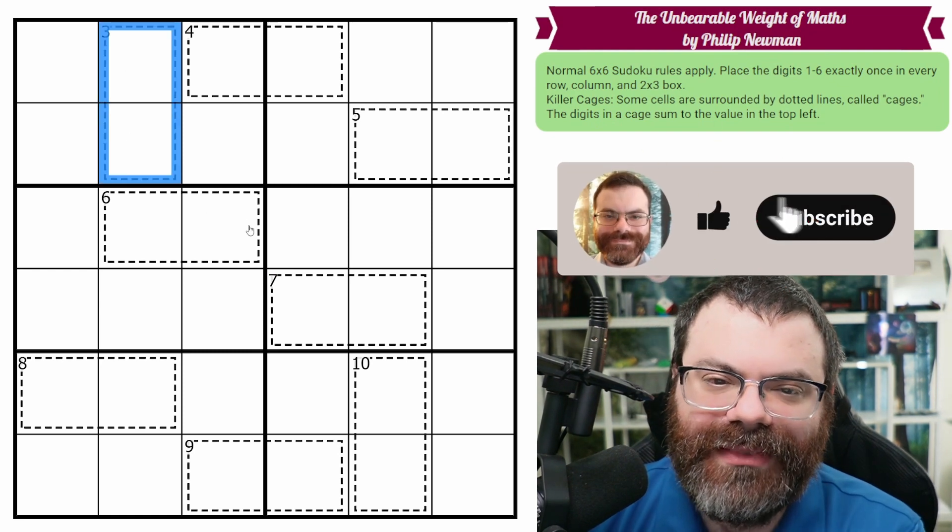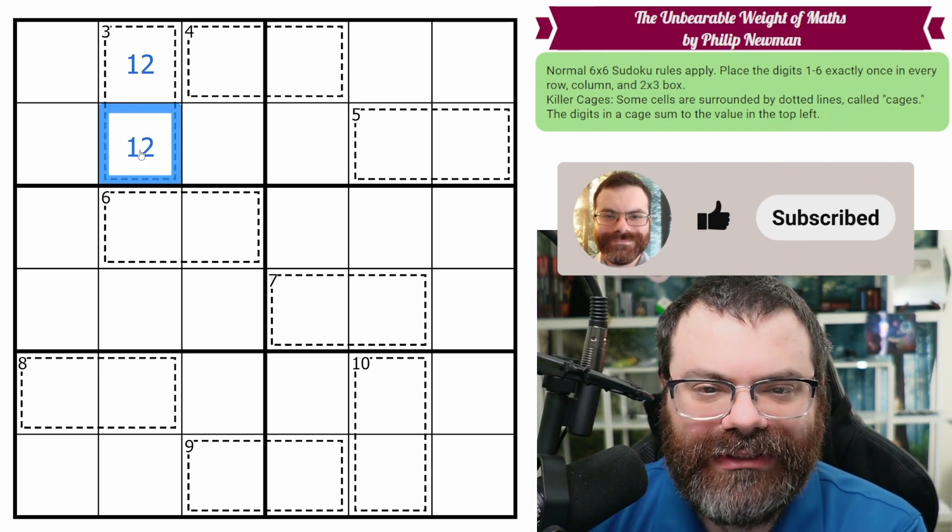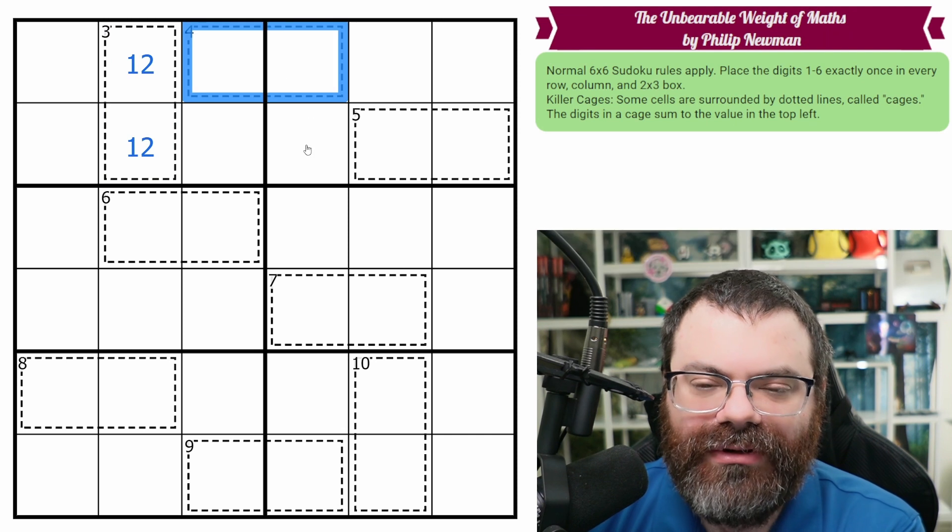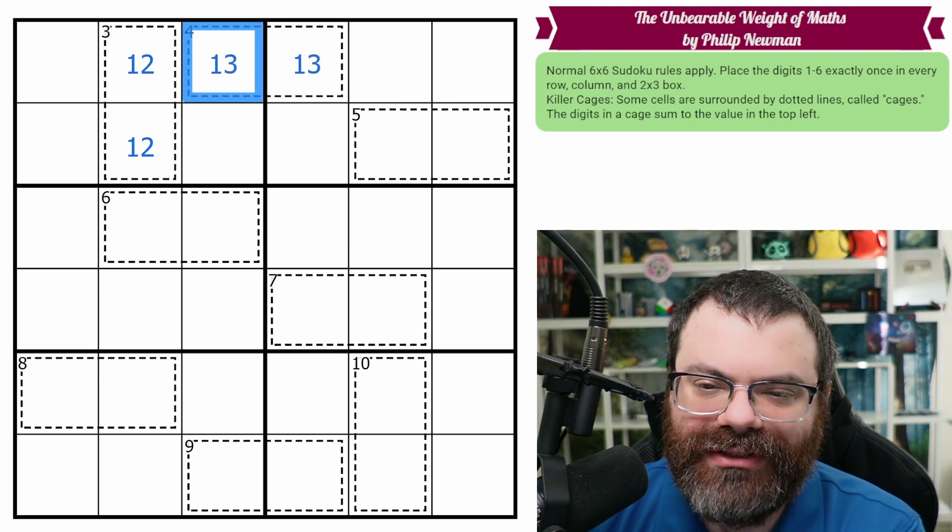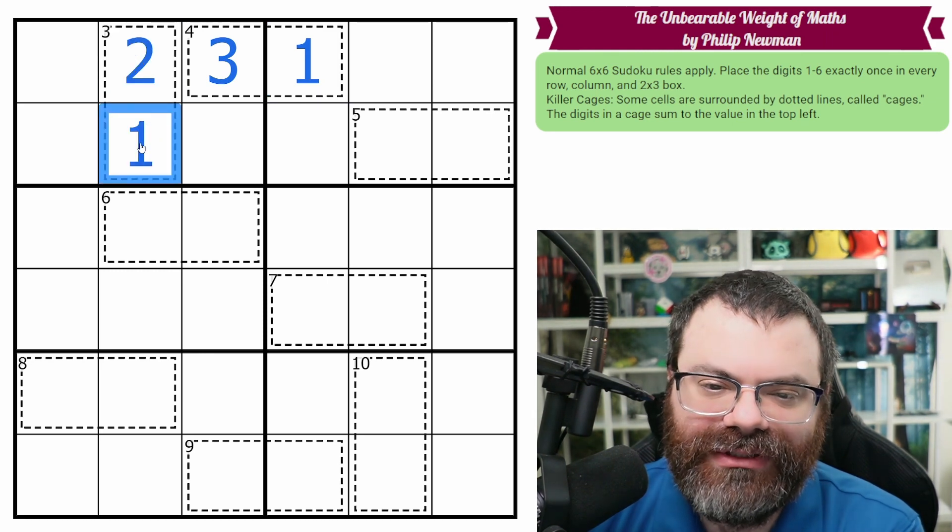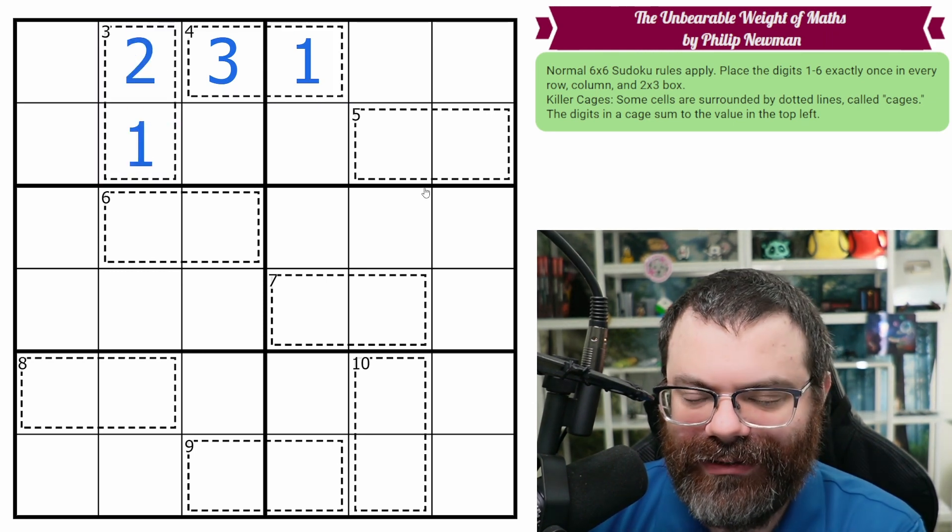All right, well, a 3, if you know anything about killer, has to be 1 plus 2. It's the only way to do that. 4 also has only one way, it's 1 plus 3, but notice we have this 1-2 pair, so this can't be 1. So that's 3 and 1. That gives us the 2 and the 1. We have 4 digits already.